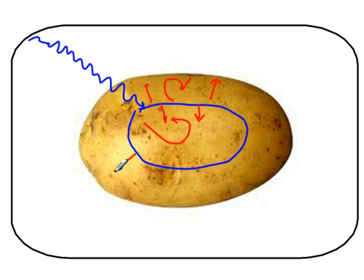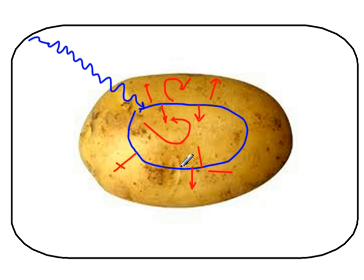Cooking a potato in a microwave is quicker — the waves penetrate two or three centimetres into the potato and then the heat is transferred by conduction and convection. For infrared radiation, the radiation only reaches the surface of the potato, and the conduction and convection have to go from the surface all the way to the centre, and therefore that takes more time.